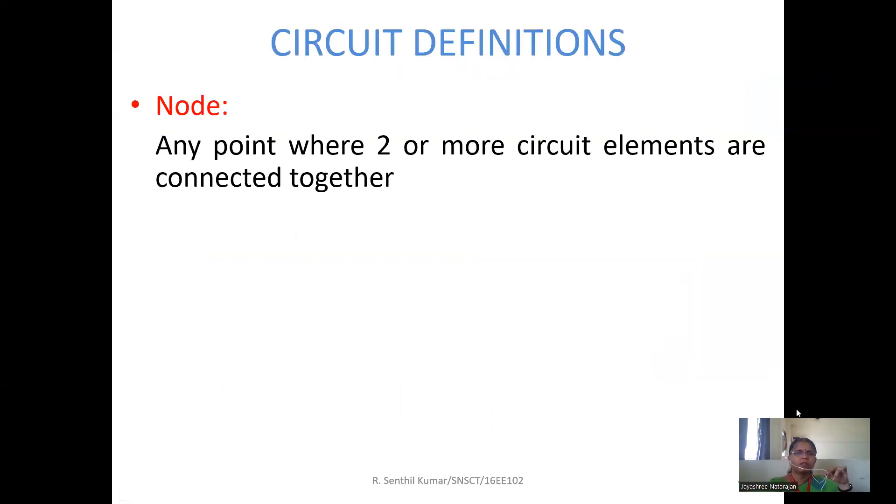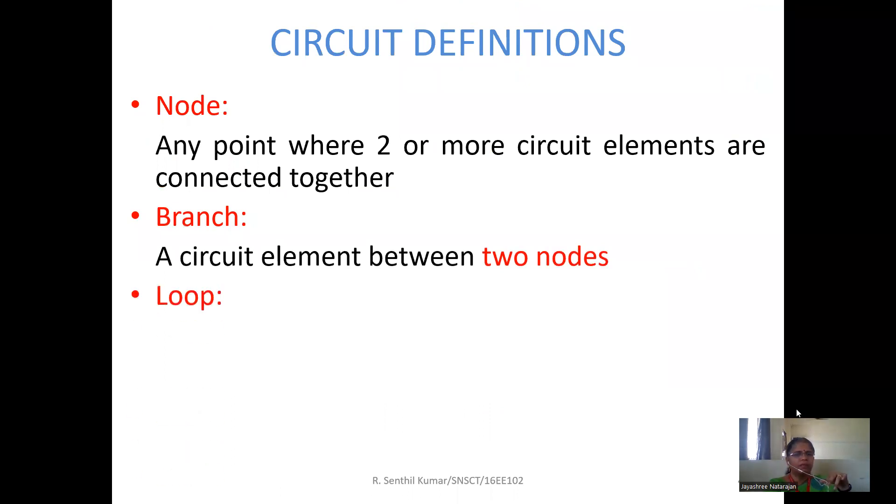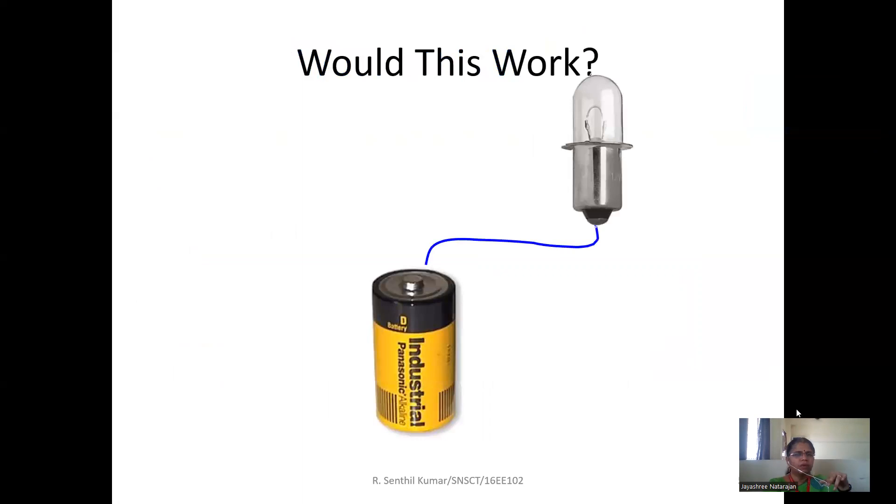What is a node? Junction point of two to three elements in a circuit, we call it as a node. Circuit element between two nodes, we call it as a branch. Closed path, we call it as a loop.